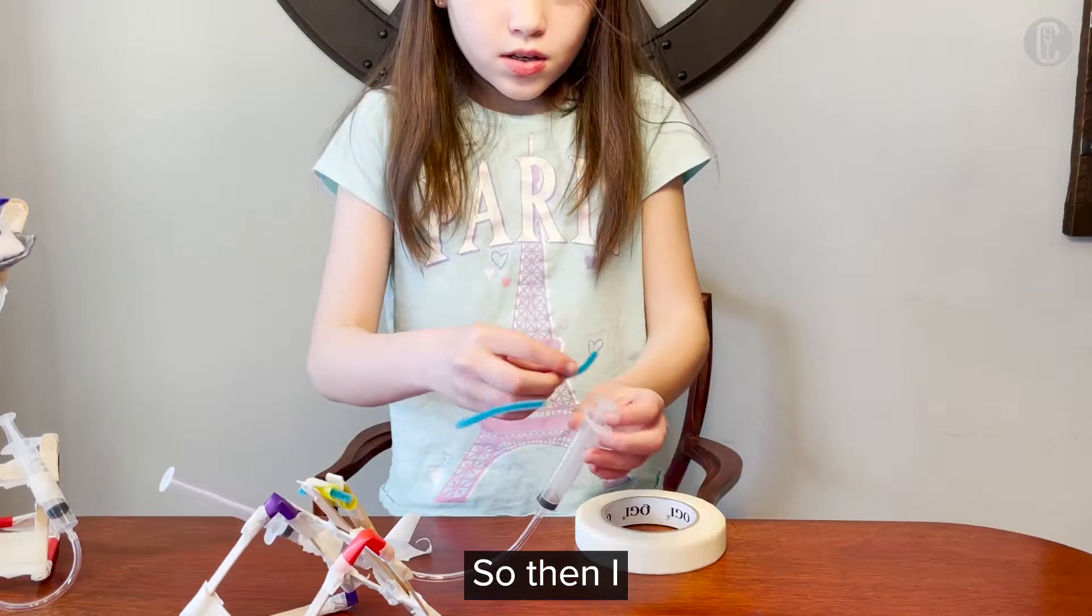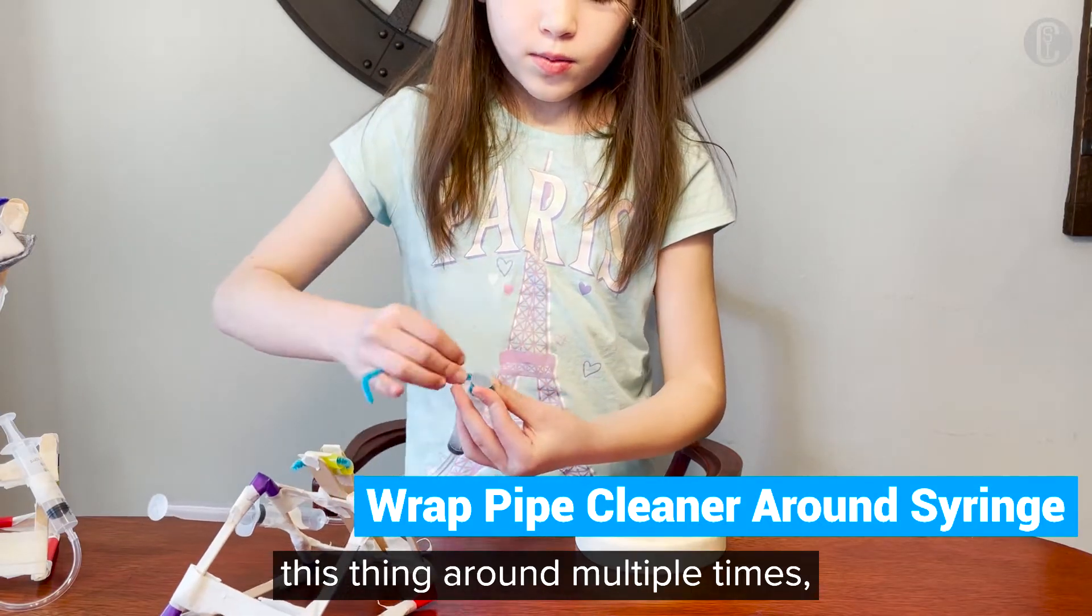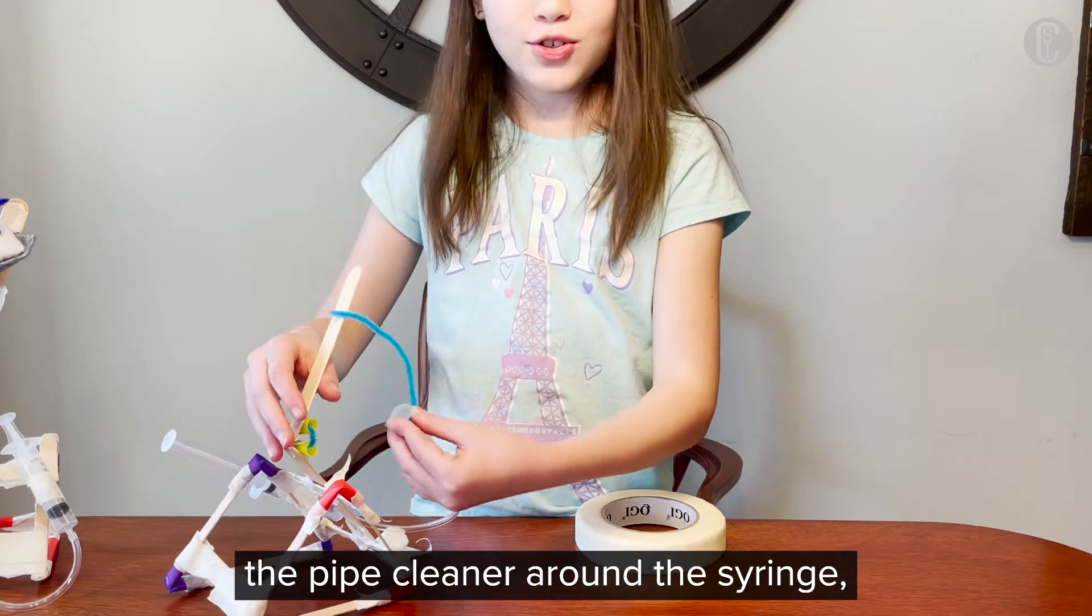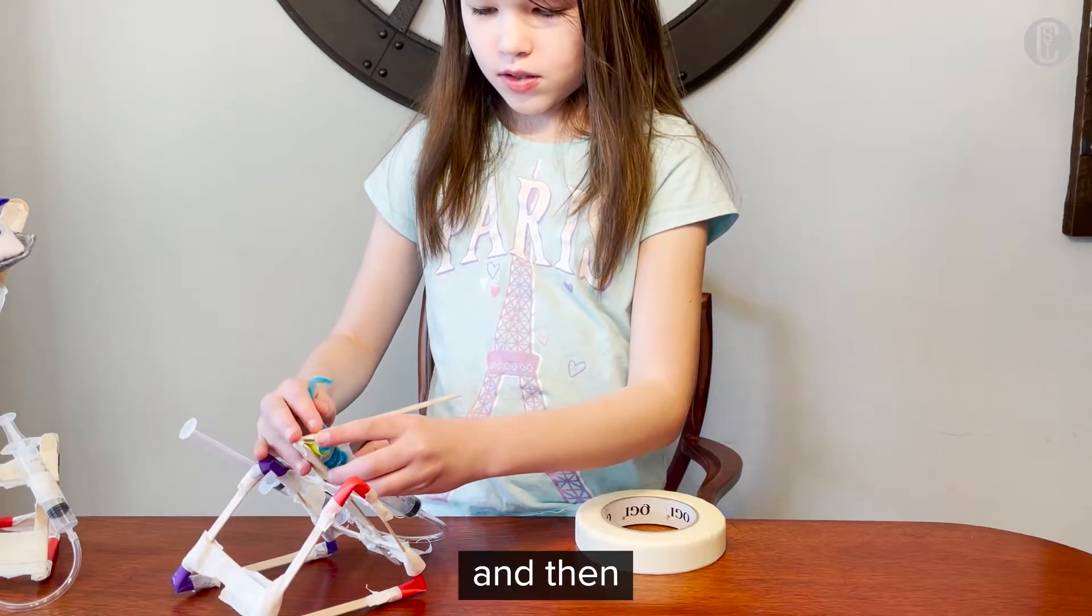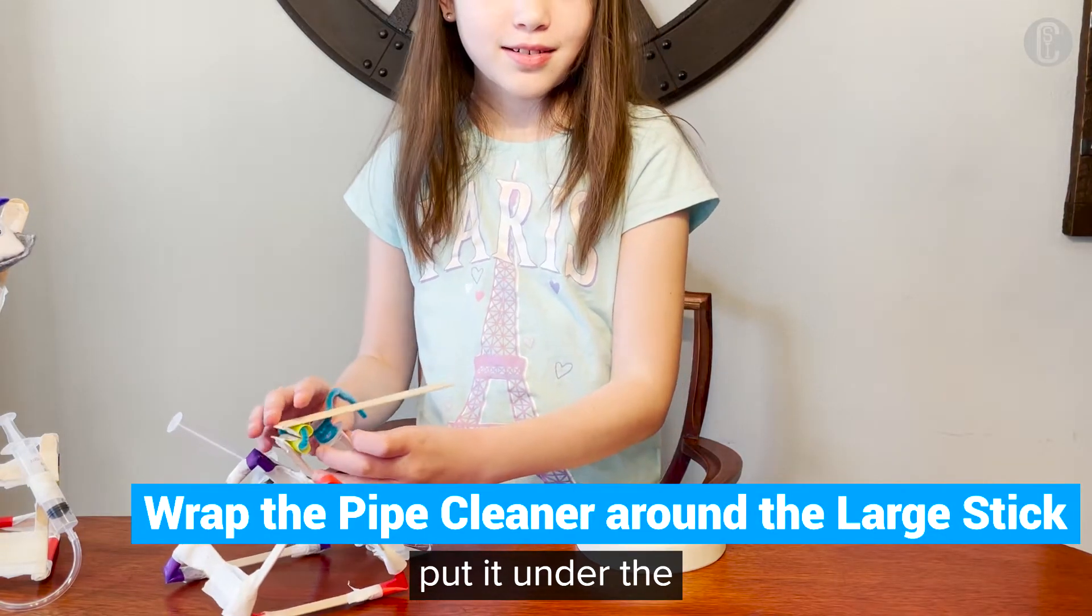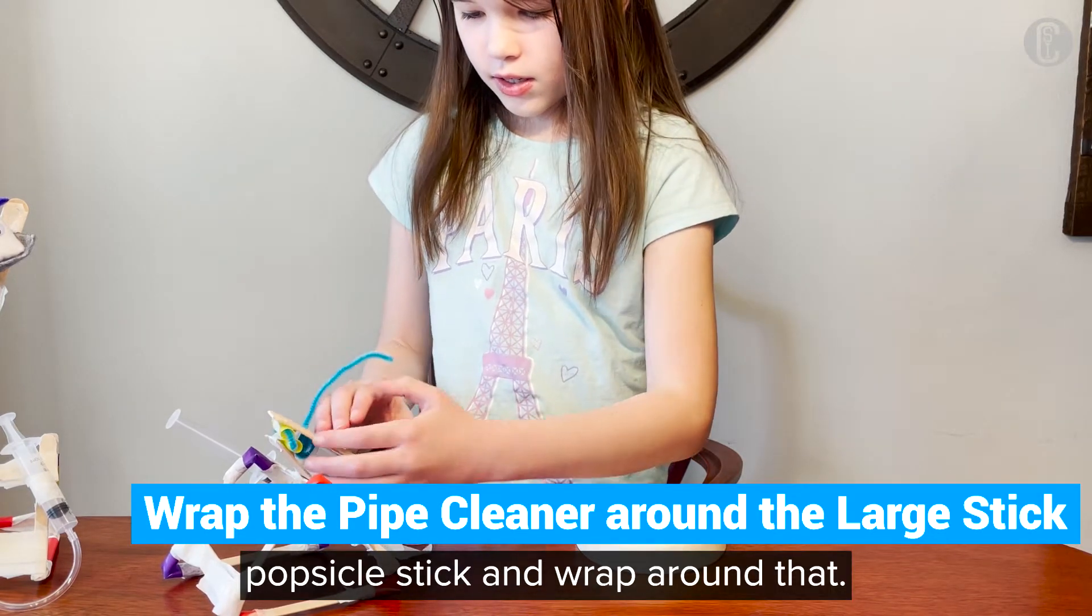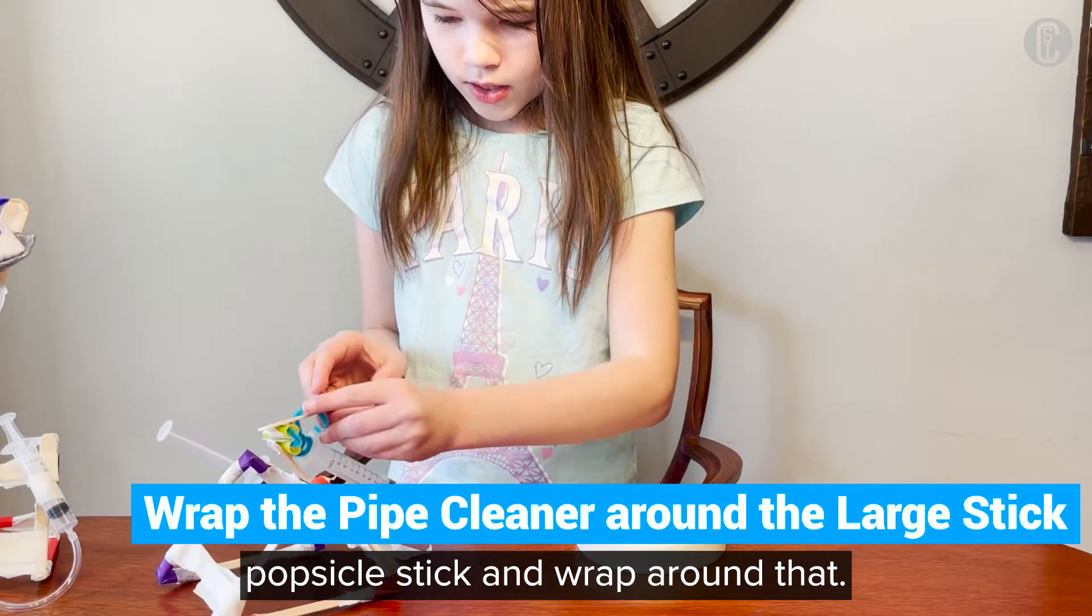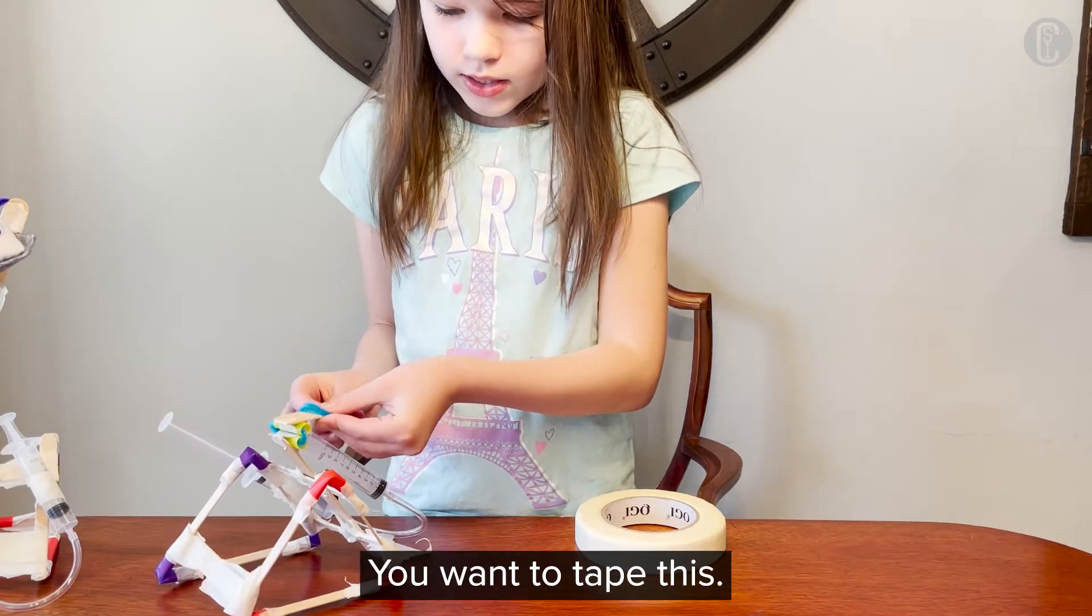So then I wrap the thing around multiple times, the pipe cleaner around the syringe multiple times. And then put it under the popsicle stick and wrap around that, and wrap the pipe cleaner around that too. You want to tape this using tape.